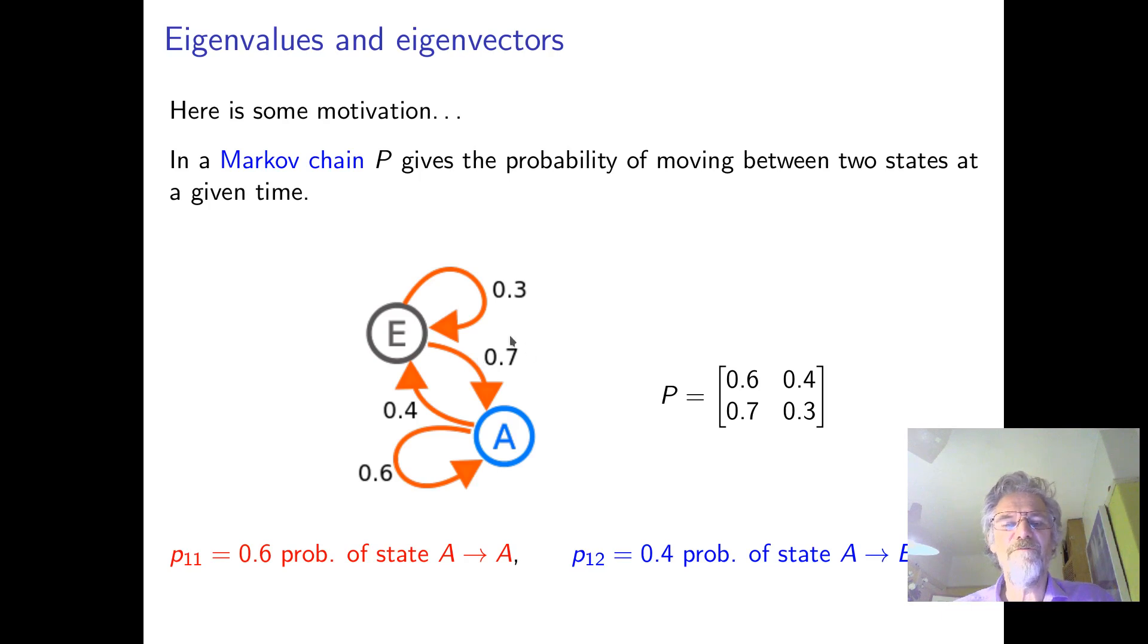So writing this as a matrix, we write the probabilities from A to A is 0.6, A to E, 0.4, and so on. So that's a little matrix problem.